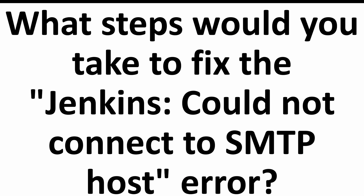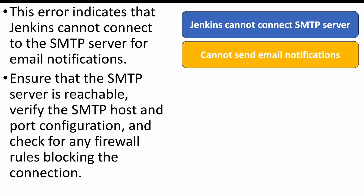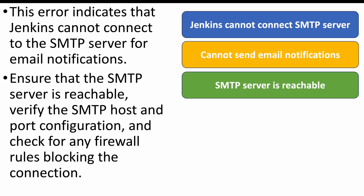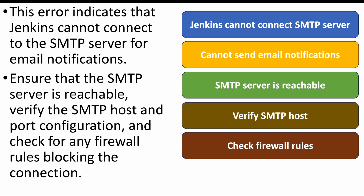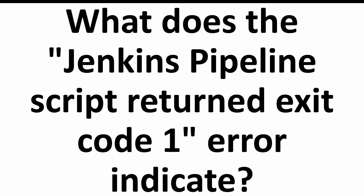The next question: what steps would you take to fix the 'Jenkins could not connect to SMTP host' error? This error indicates Jenkins was unable to connect to the SMTP server to send email notifications. To fix it, ensure the SMTP server is reachable with no network or firewall issues, and verify the SMTP host, port configuration, and firewall settings so Jenkins can communicate with the SMTP server.